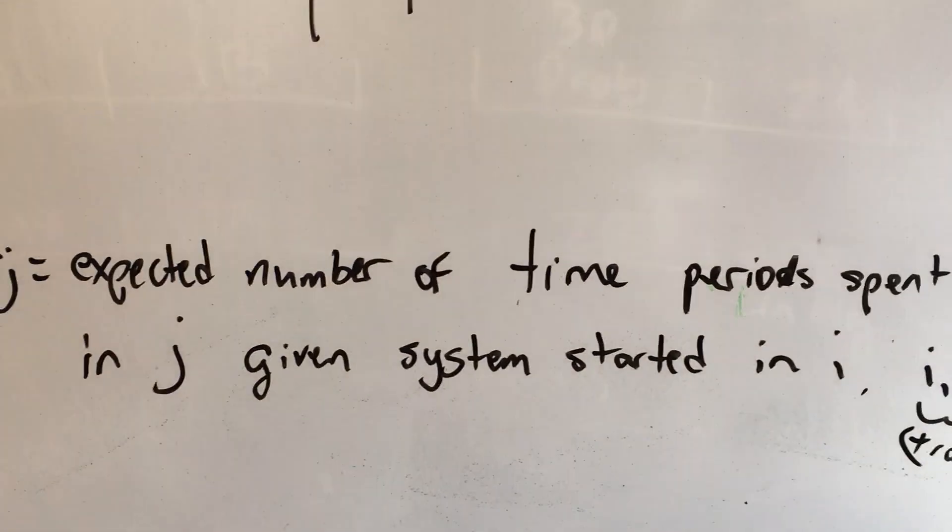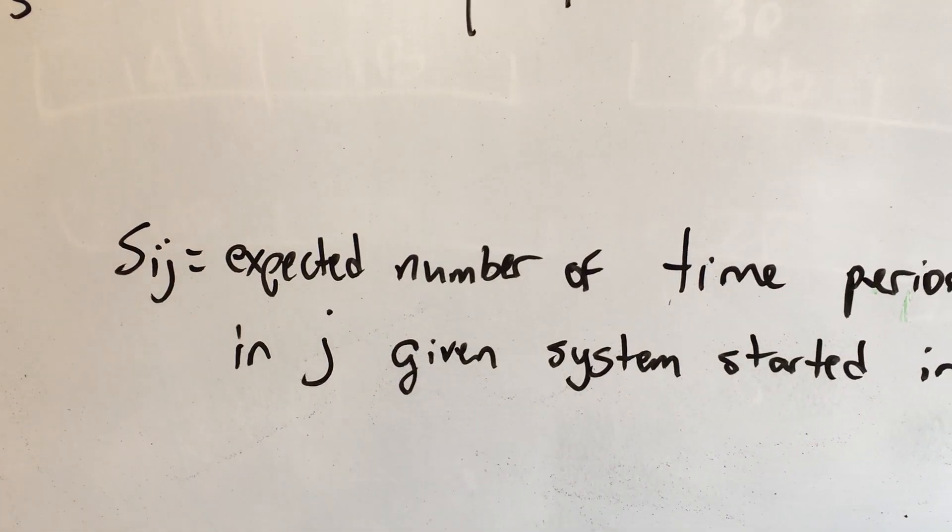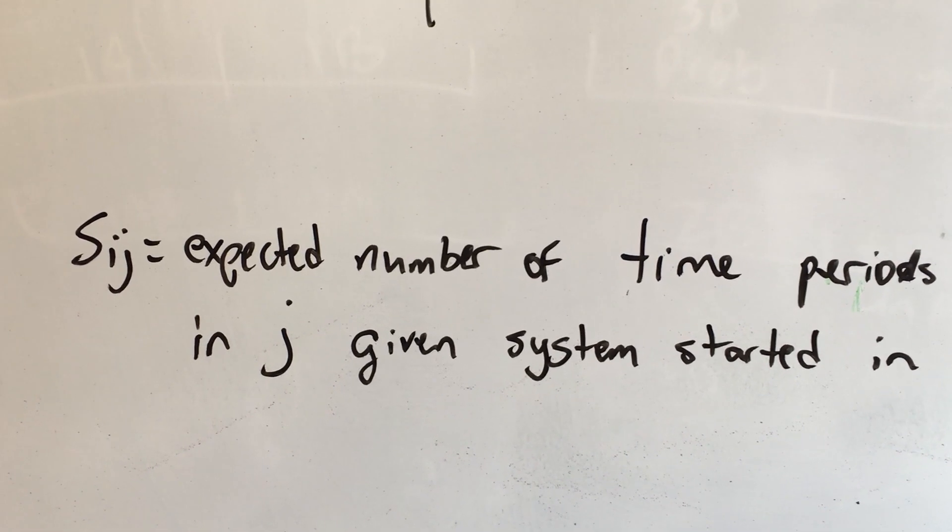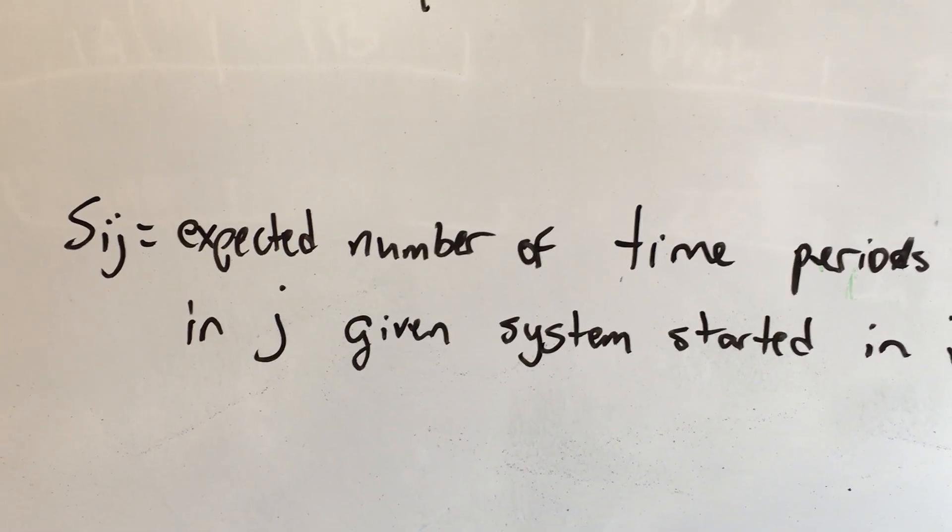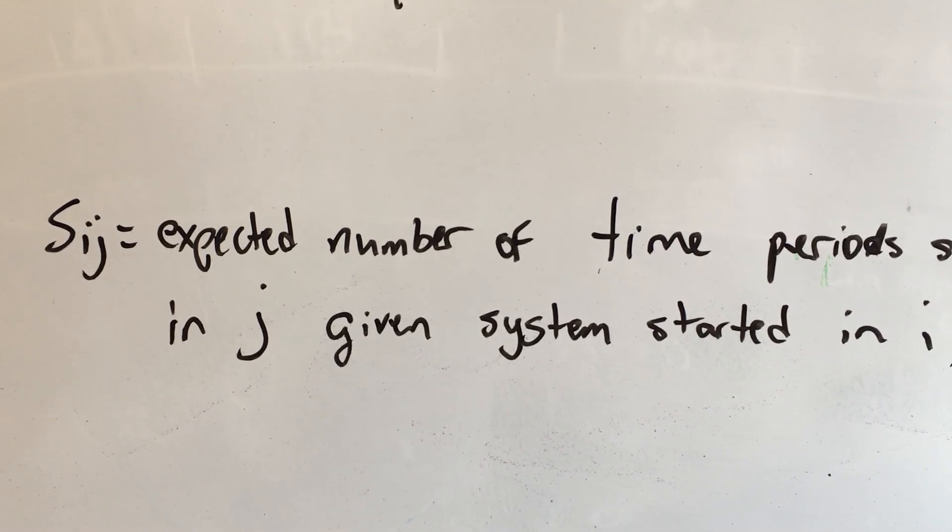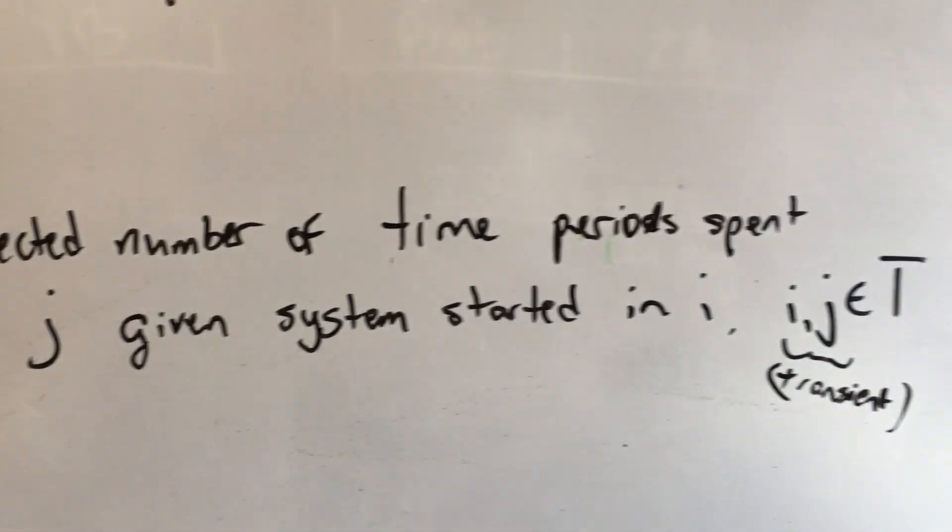So in your system, you have a set of transient states. If you start in state I, which is one of your transient states, what's the expected number of periods that you're going to spend there, that you're going to spend in state J? Okay, now one more definition.